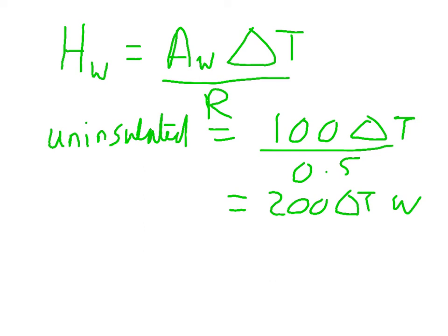The windows are less good at resisting, but there are a lot more walls. When you insulate it, it's equal to 100 delta T over 3, which is about 33 delta T.